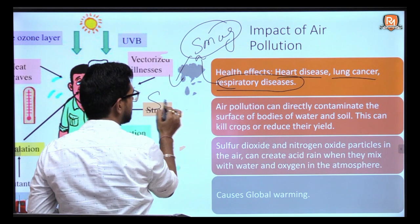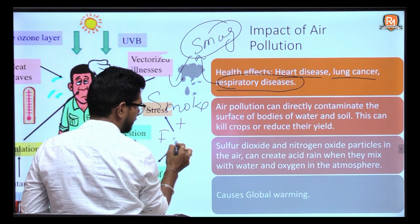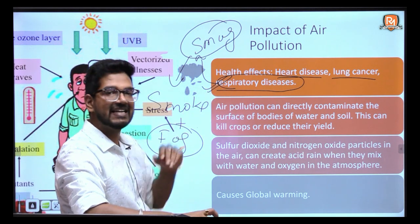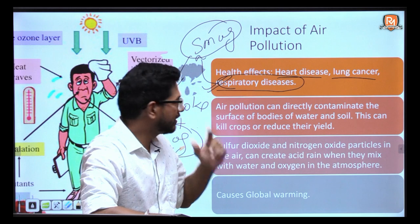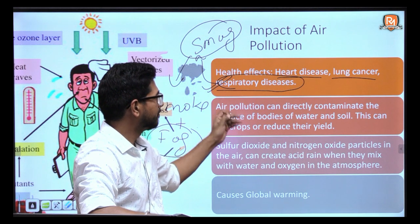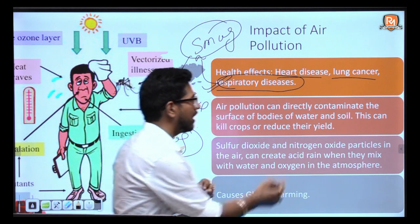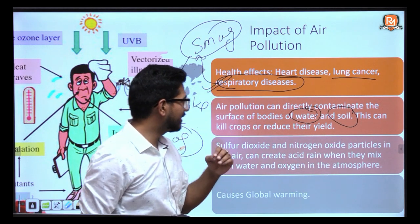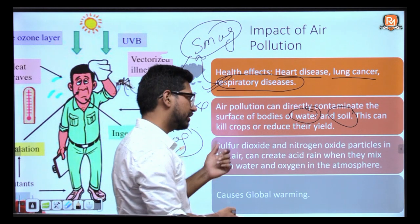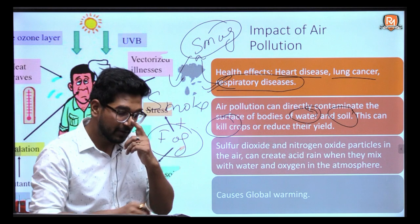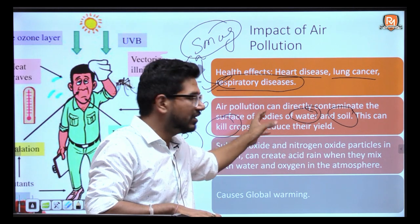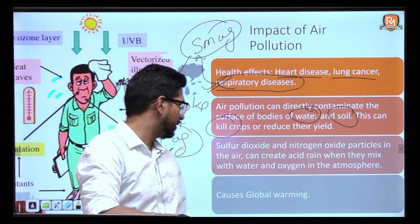Smoke plus fog — that is smog — is very dangerous for asthmatic patients and can permanently damage your lungs. Air pollution also directly contaminates water and soil. Even acid rain is directly related to the quality of air.